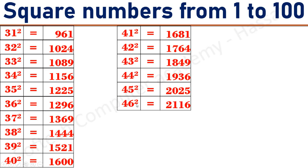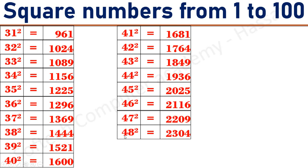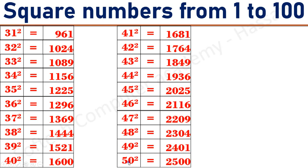46 square equals 2116. 47 square equals 2209. 48 square equals 2304. 49 square equals 2441. 50 square equals 2500.